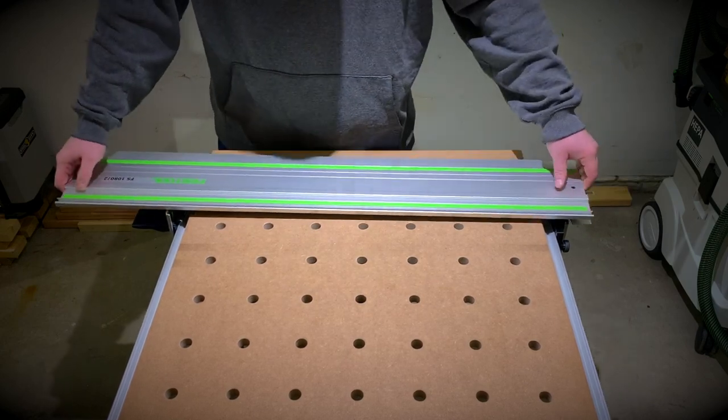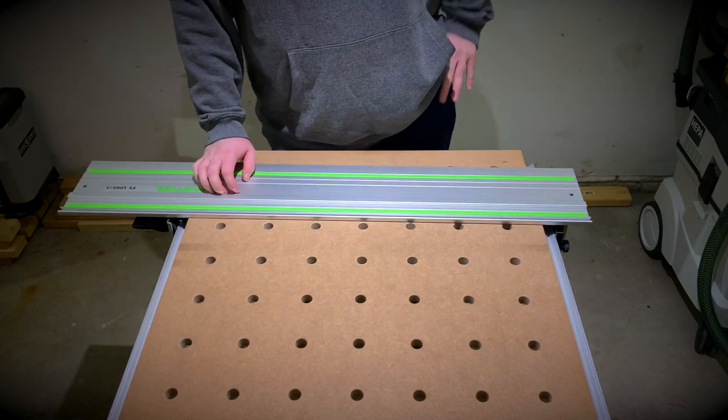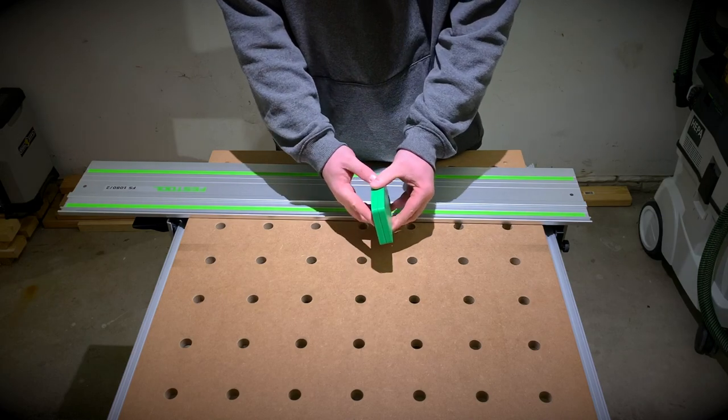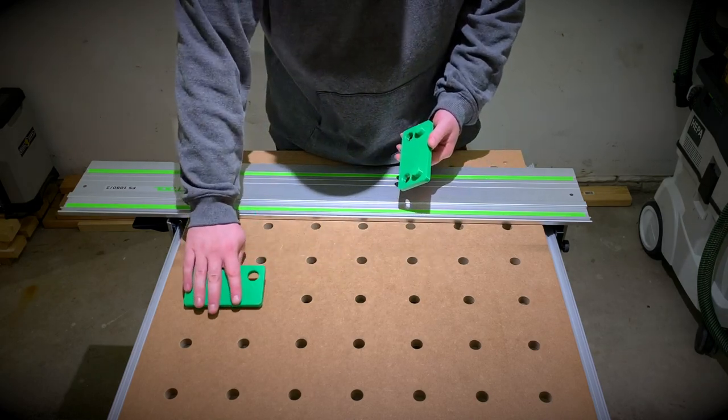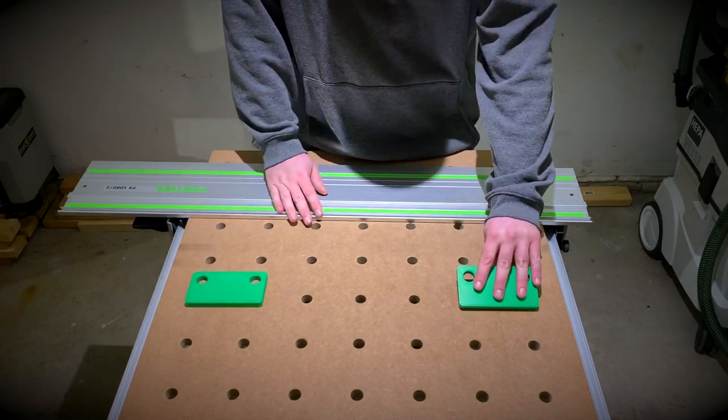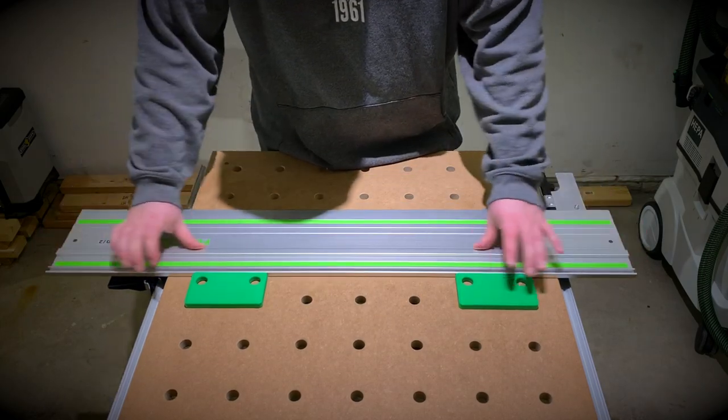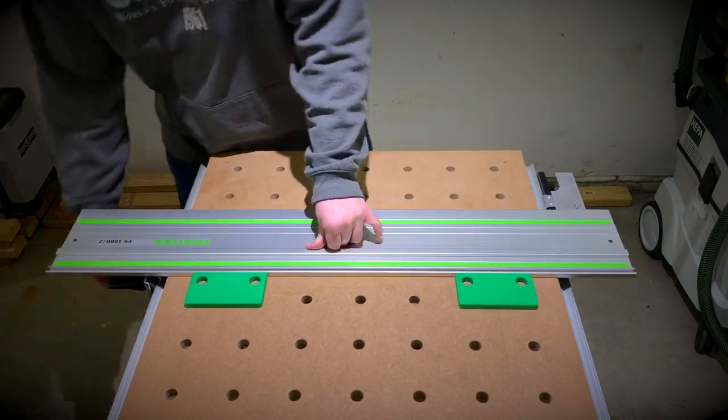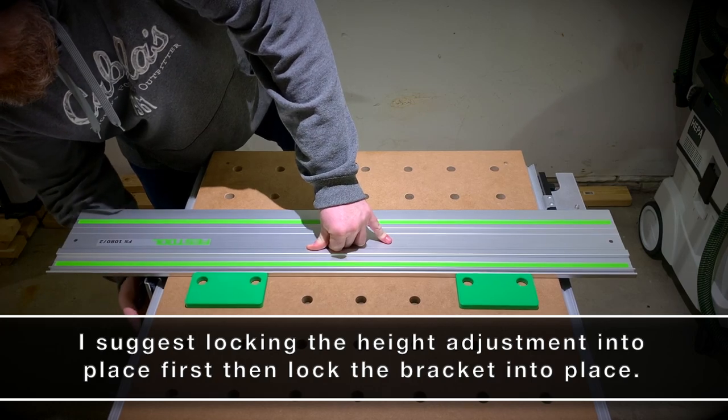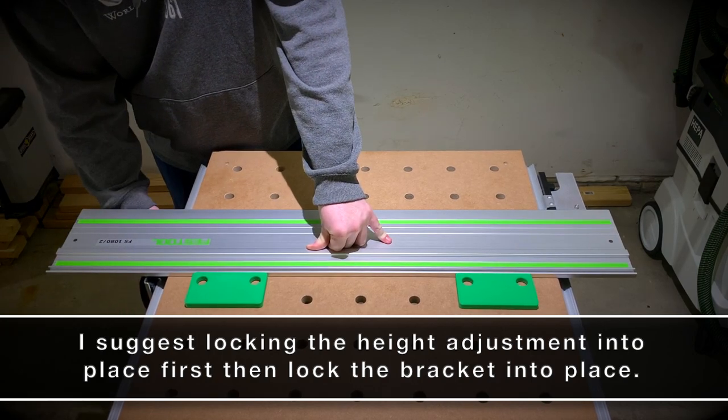When setting the guide rail, you want to make sure that the holes on the jig are closest to the rail. This will ensure that the cut line will be in between two columns of holes. With the jig placed in the table, slide the guide rail until it fully seats against both setup blocks. At this time, you're going to want to lock that back bracket into place.